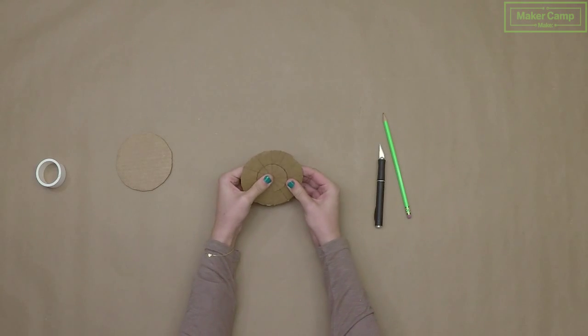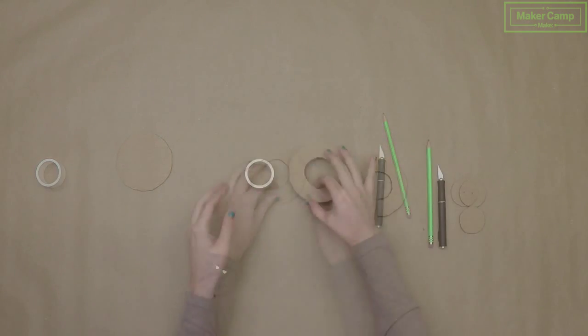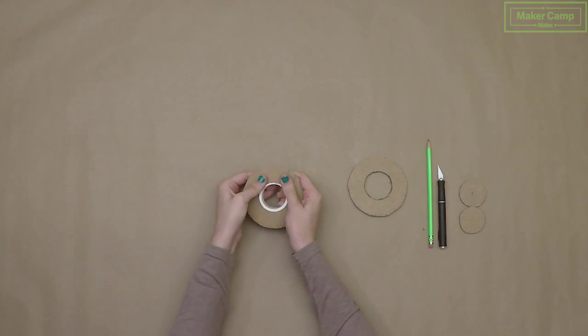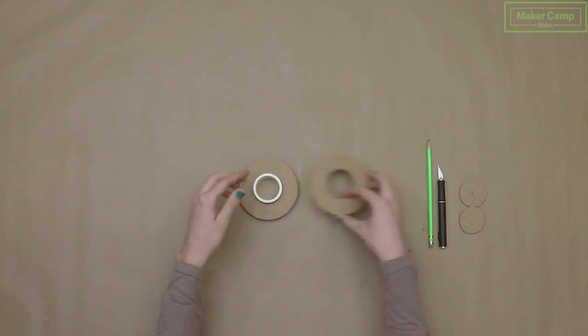Do this for both cardboard disks. Make sure that the PVC pipe fits snugly into the holes that you just cut.